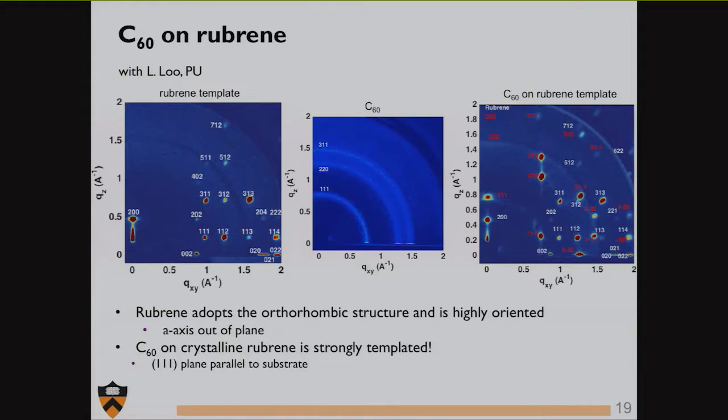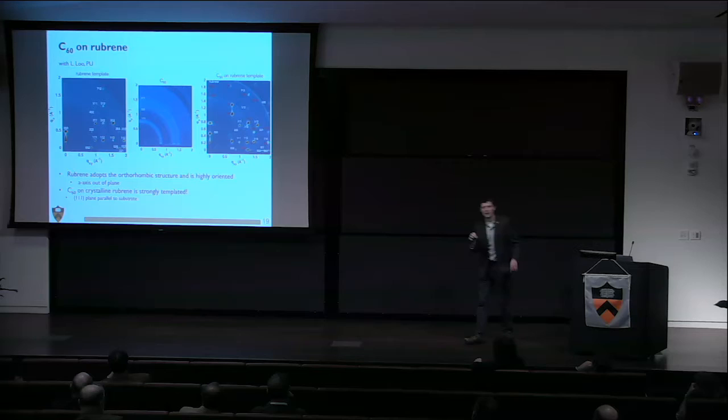When we deposit C60 on this rubrene template, we see a very different situation. C60 adopts very specific orientation. Anything marked with red is a C60 diffraction event, anything marked with white is a rubrene diffraction event. We've made a very prototypical single crystalline heterojunction between rubrene and C60. That's our donor-acceptor heterojunction.